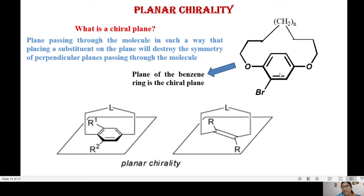For example, this benzene ring is lying in a plane. Imagine that it is lying on your desk. If you have a substituent which is destroying the symmetry of this benzene ring, which has a ring on top of it, then you have a chiral plane. The plane of the benzene ring here is the chiral plane. Once you put a substituent here, the symmetry is lost. Even if you have only R1 or R2, the symmetry is lost.